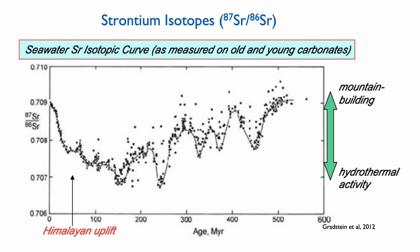Strontium isotope refers to the ratio of strontium-87 over strontium-86. Strontium-87 tends to be associated with the decay of rubidium and with erosion of crystalline basements — so more with mountain building. Whereas strontium-86 comes from a completely different source: basalts, often associated with mid-ocean-ridge basalts and hydrothermal activity. Peaks in 87/86 represent episodes of orogeny and mountain building, while troughs represent increased hydrothermal activity.